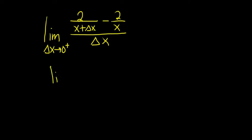The first thing we want to do is rewrite the limit sign. And then in the numerator, we just want to subtract. So we're going to write down the LCD. The LCD in the numerator is x plus delta x times x.